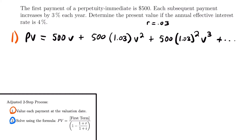Step two: solve the present value using the formula — present value equals the first term divided by 1 minus (1 plus r) divided by (1 plus i). The annual effective interest rate is 4%, so i equals 0.04. The numerator is just the first term from our series. We take that first term and divide it by 1 minus (1+r)/(1+i). Check our lesson for a full derivation of this formula.